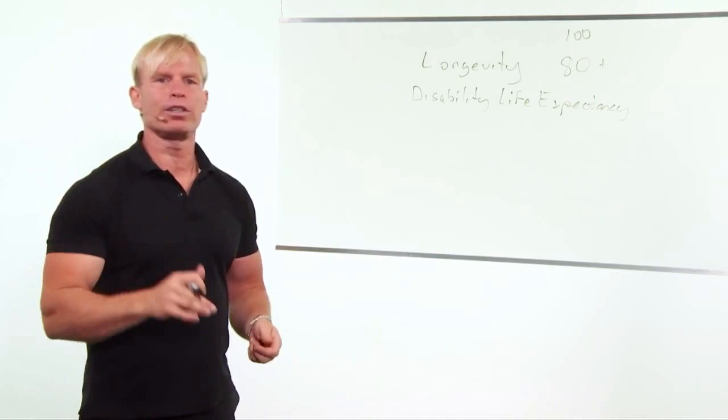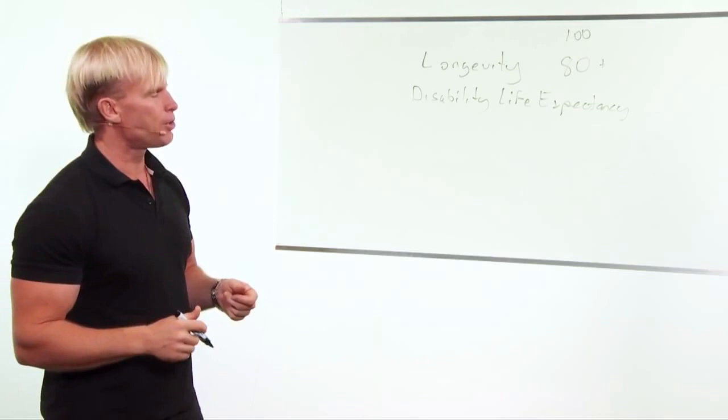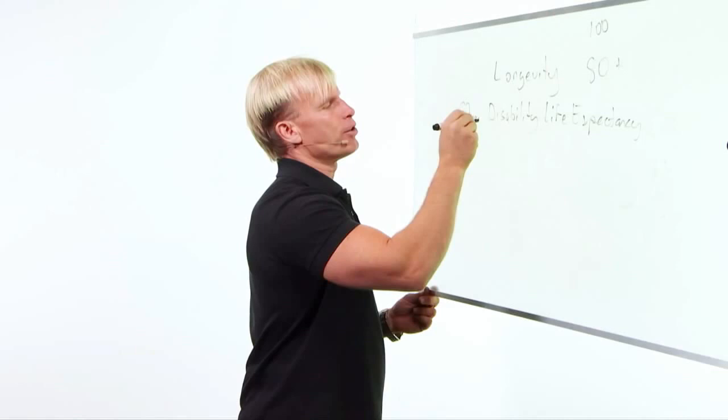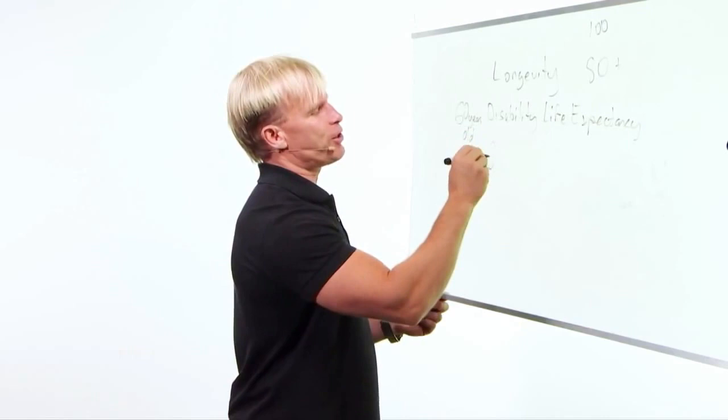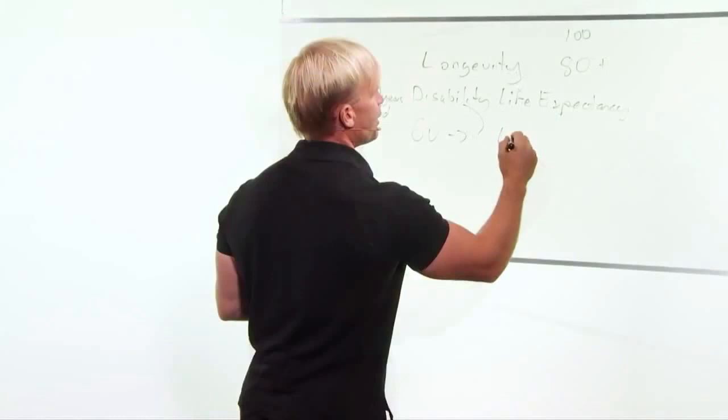But ideally, this is the interesting statistic - if you look at one of my earlier books called Vital Power, I talked about this: the disability-adjusted life expectancy in North America is approximately 60 years old. What that means is the expectation, if you're living in a country like the United States, is that by the age of 60 you're going to have some disability that's compromising your lifestyle.